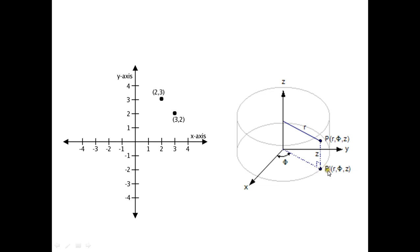For example, if you want to find a point P-prime, there are three axes: R, which is the radius from the center to the point; phi, which is the amount of angle from the x-axis; and G, which is the height along the axis. This is the core cylindrical coordinate system.